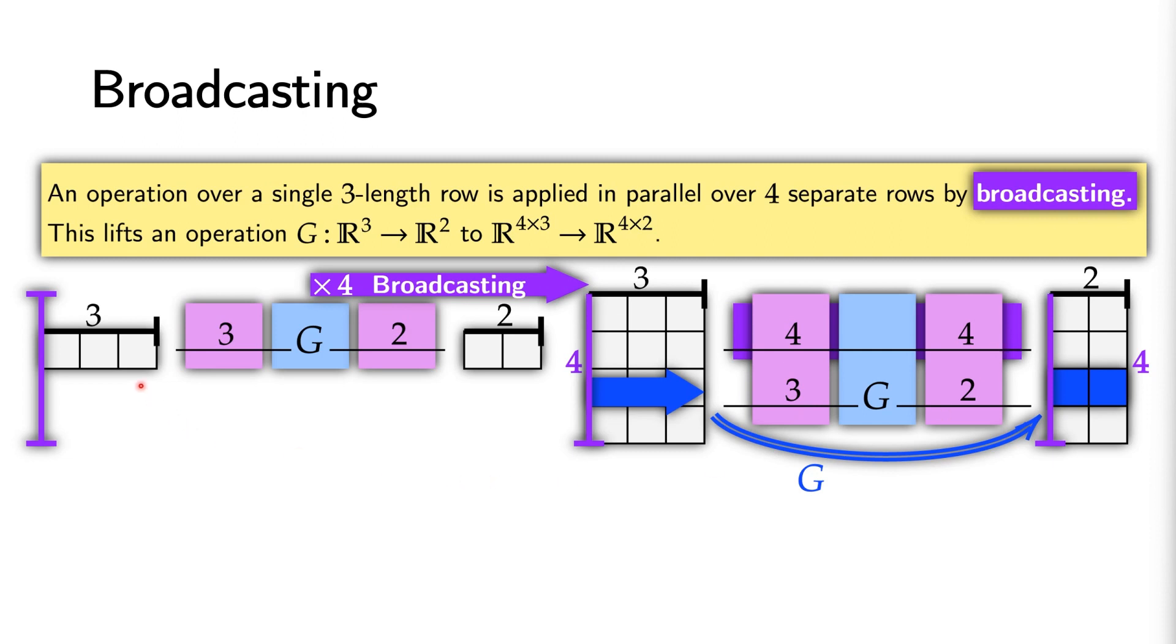Here, we can see how an operation on a length 3 vector to a length 2 vector becomes an operation from a table to another table.